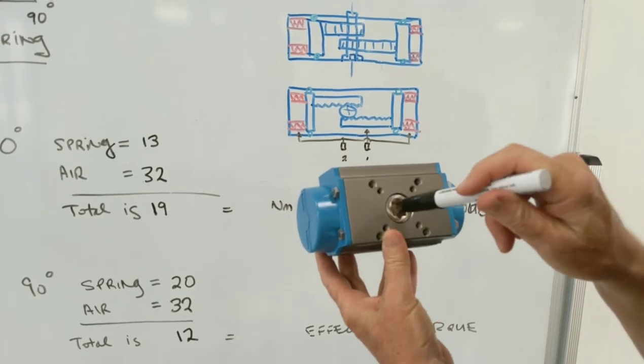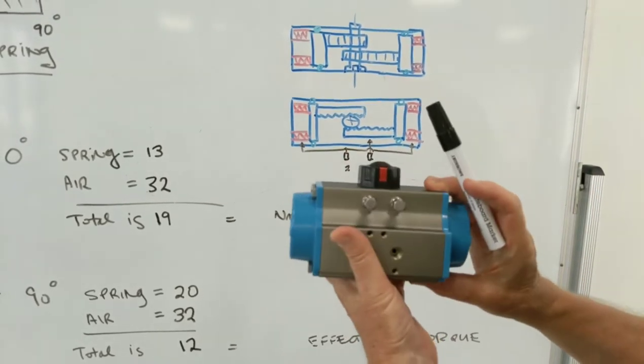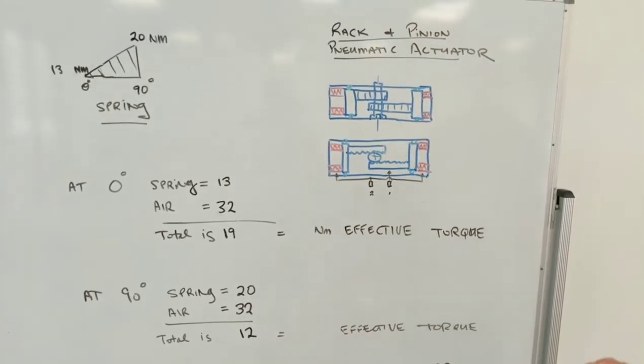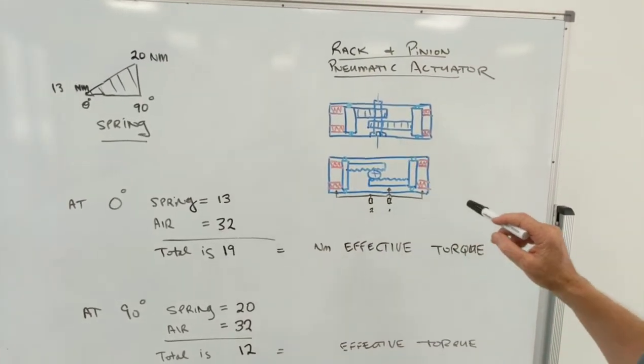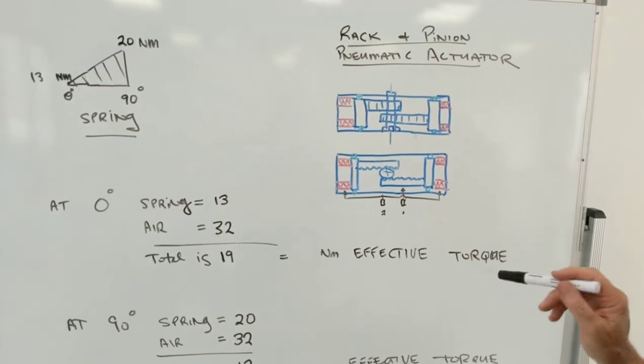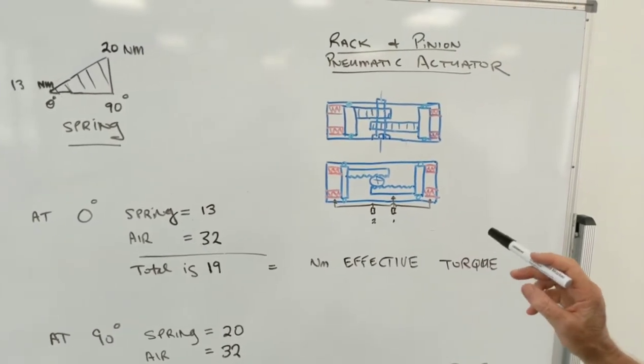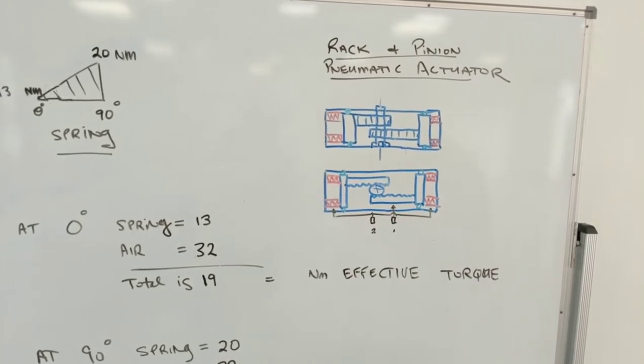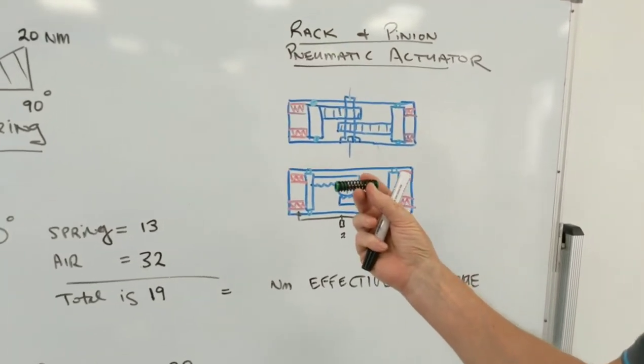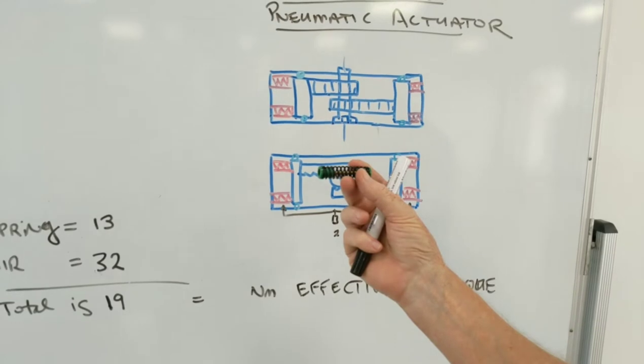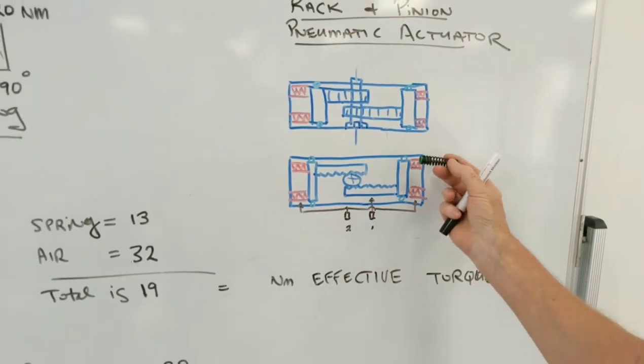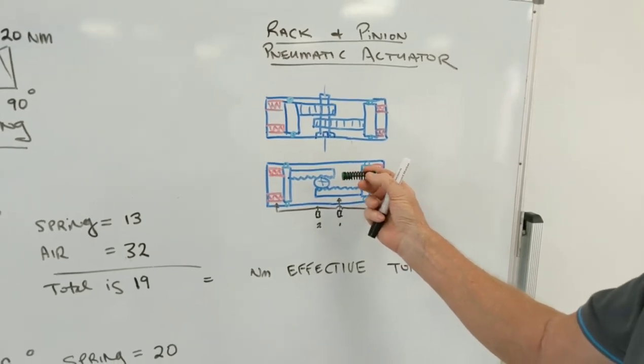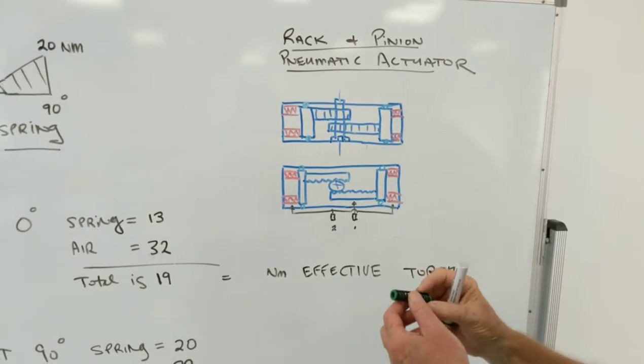Rack and pinion, that's the pinion going through the center. The spring return actuator and the double actuator both look identical on the outside. The difference is that a spring return actuator is a double acting actuator with springs. Here's an example of the pre-loaded springs that go into the end and we can have up to six springs per end. Obviously more springs, the greater the spring closure of the ball valve.